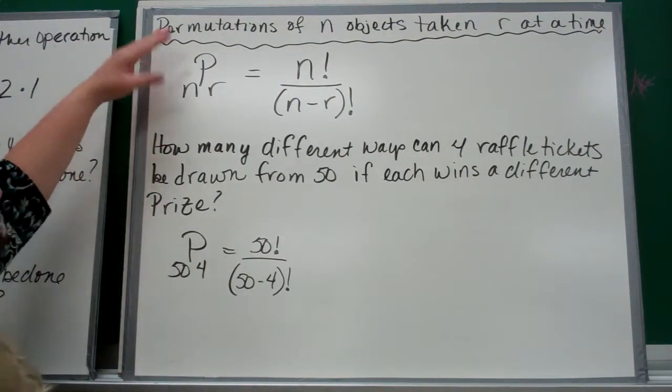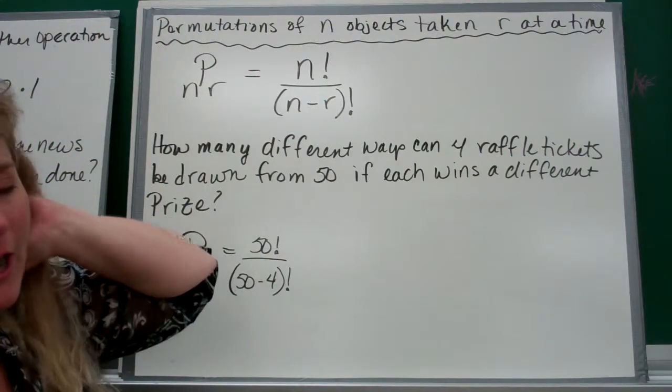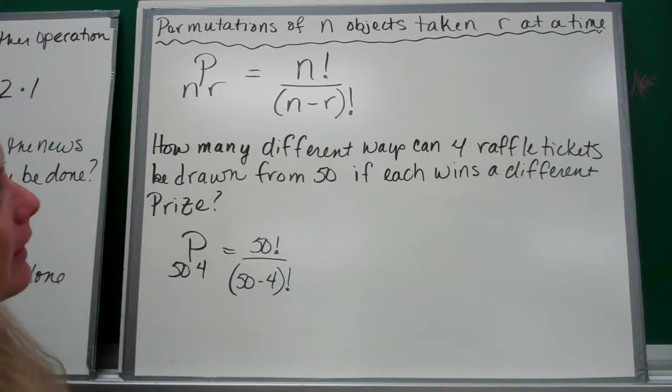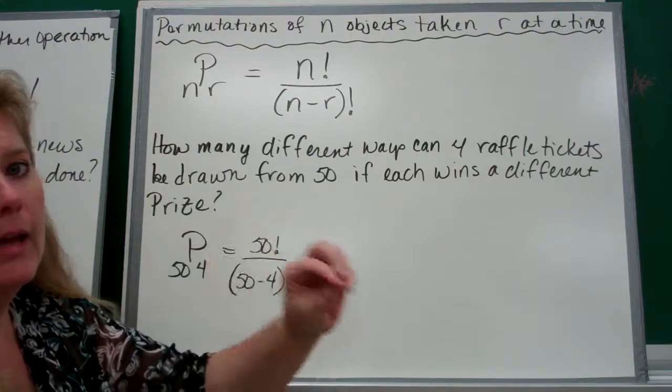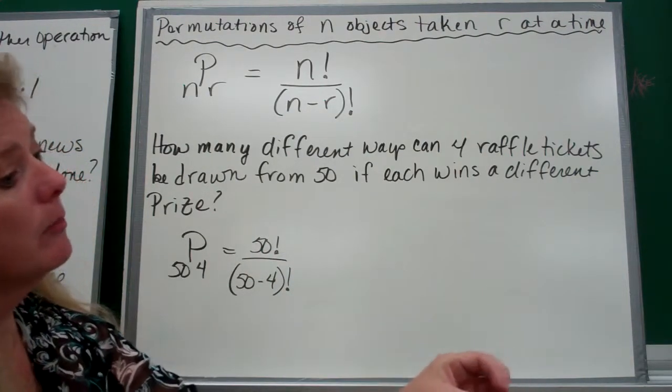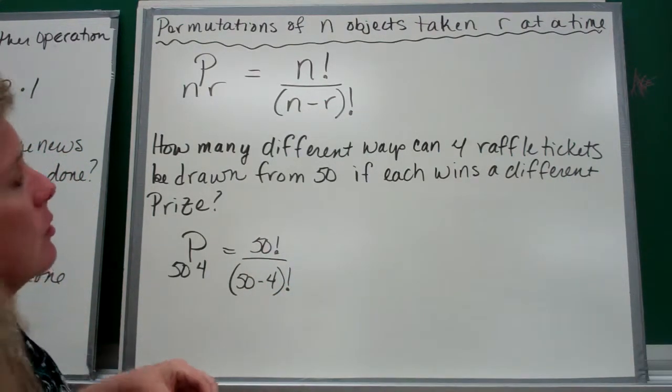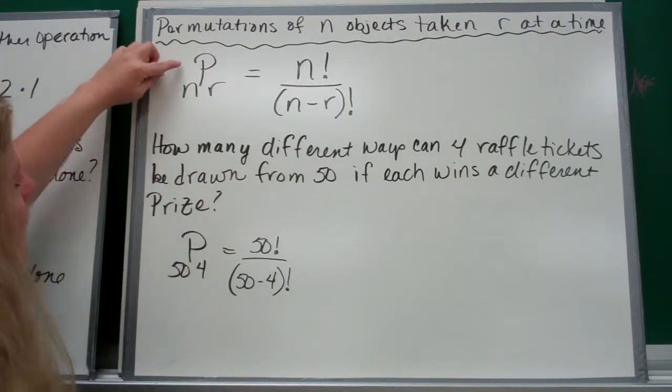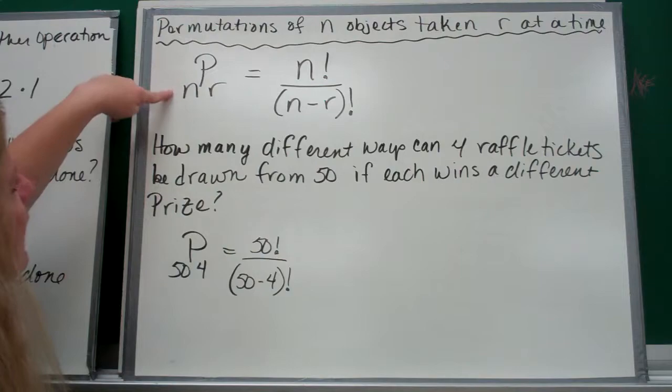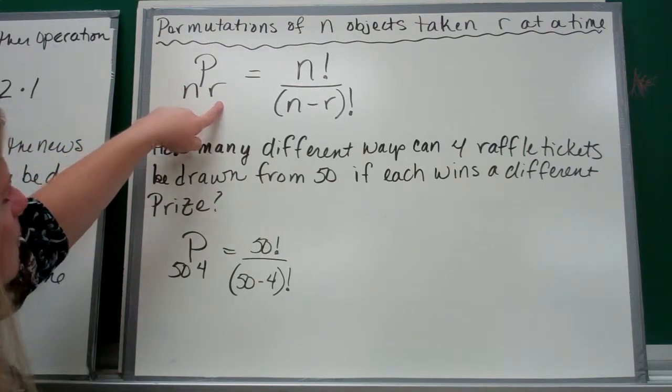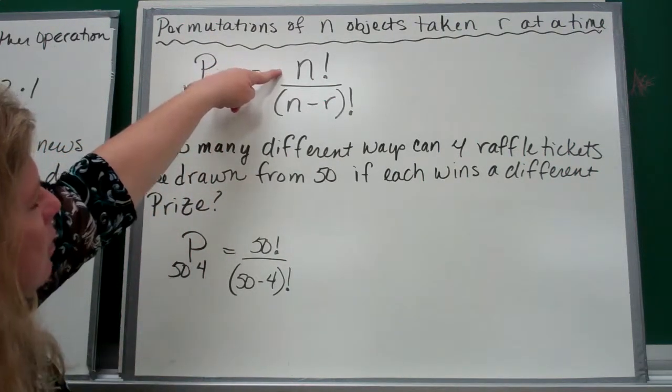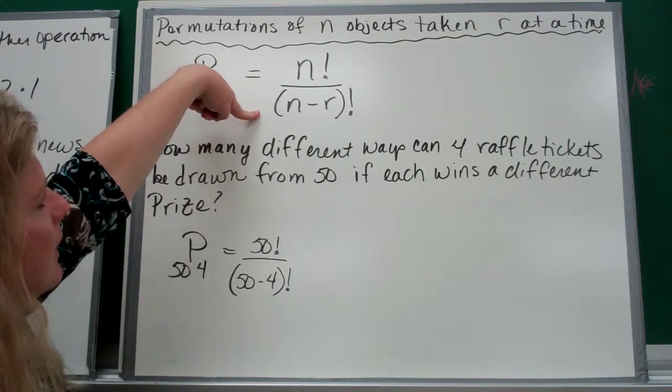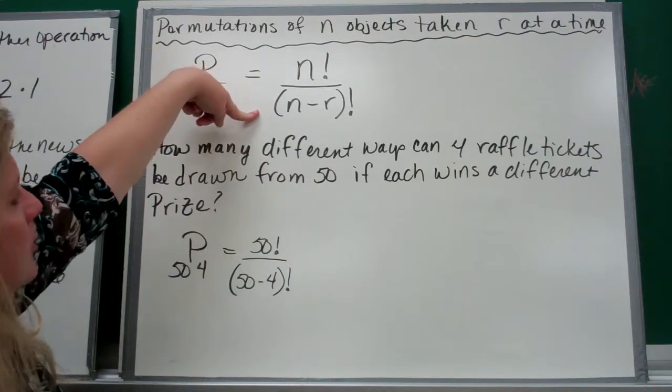Now permutations of n objects taken r at a time. Like in that last example, I had eight TV shows but I can only pick three of them. Here's a special formula: it's a permutation of n taken r at a time. To do that formula, it's going to be n factorial divided by (n-r) factorial.